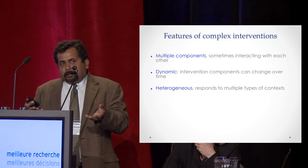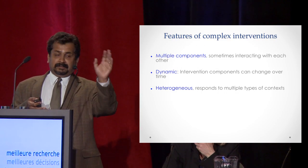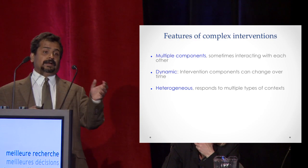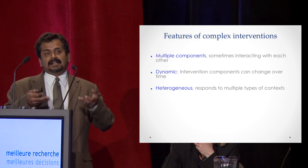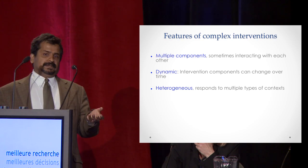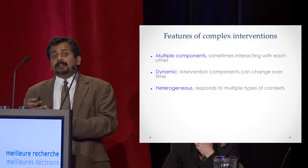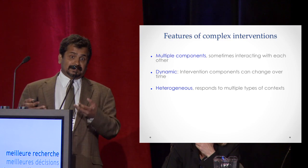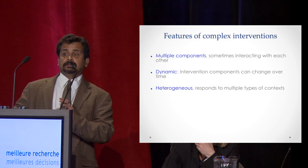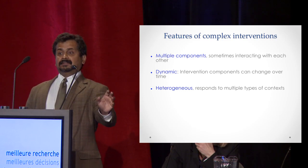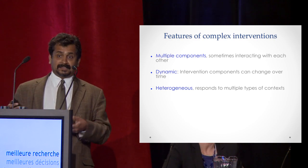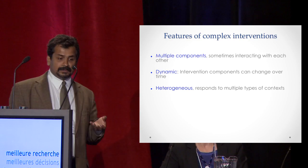If you look at Have a Heart Paisley and its multiple components — there's a whole range of reach activities, screening, health coaching, and a whole lot of other interventions — these are multiple components that may or may not interact with each other. As it turned out, one of the organizational mistakes they made was not having interactions between the different components. Once the reach team did their thing, they said 'we're done,' and passed it to the screening folks. That's not a way to implement complex interventions.